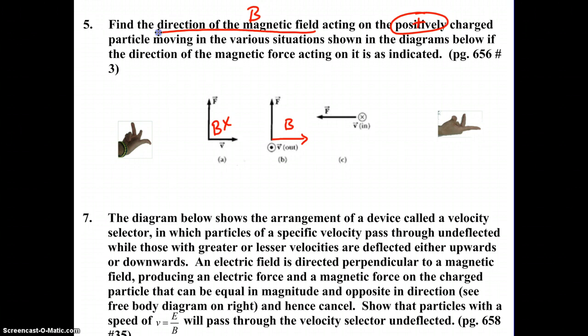Lastly, with C, our velocity is in, so our thumb is pointed in. Our middle finger stays to the left, so our V is in the Z-plane, our F is in the X-plane. We know that our magnetic field direction has to be either up or down in the Y-plane. With our thumb in and our middle finger to the left, our index finger is pointed down. So B would be down.